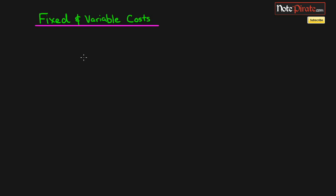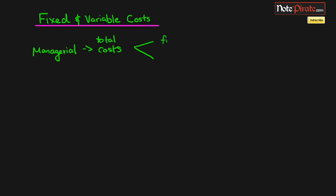It's a good thing we went over cost drivers in the last tutorial, as fixed and variable costs are actually tied to that concept. In managerial accounting, we're going to run into a bunch of different total costs, and these can usually be separated into two types: the first being fixed, and the second being variable. We're going to talk about each of these and see how they change in total and per unit when looking at cost driver activity.